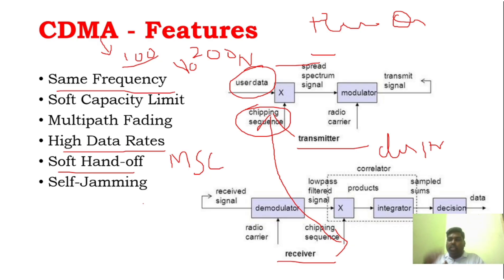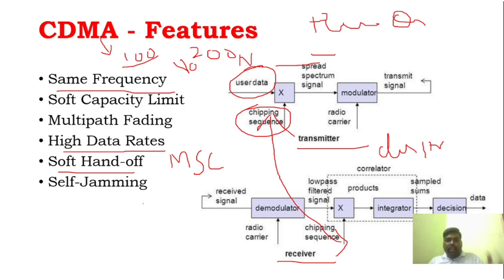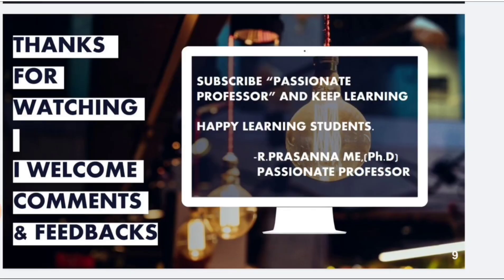The output of the correlator is given to the decision device, from which we can find out the original data. So this covers CDMA features — very important questions include the core concepts and features of CDMA, particularly the near-far effect, power control, same frequency use, soft capacity limit, self-jamming, and soft hand-off. Thank you students for watching. Subscribe to Passionate Professor and keep learning. Thank you very much.